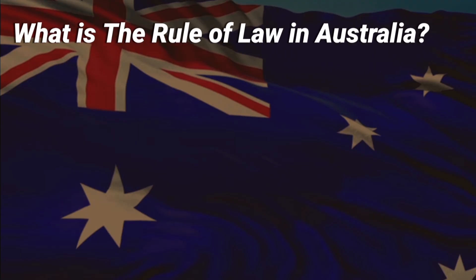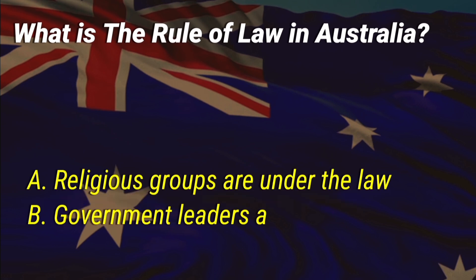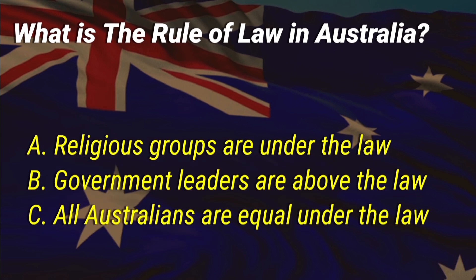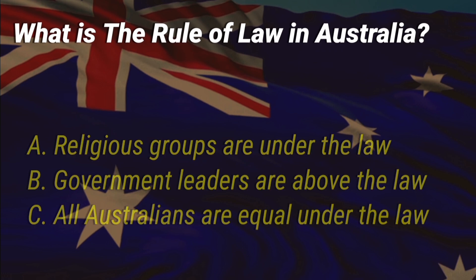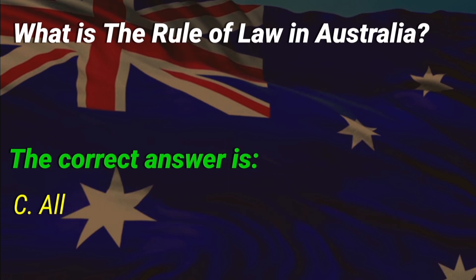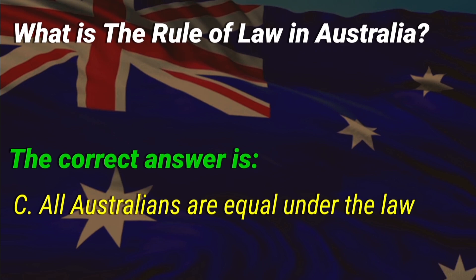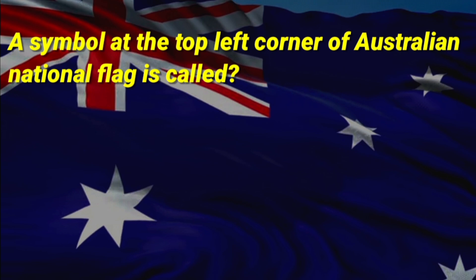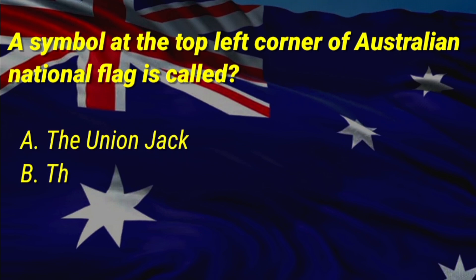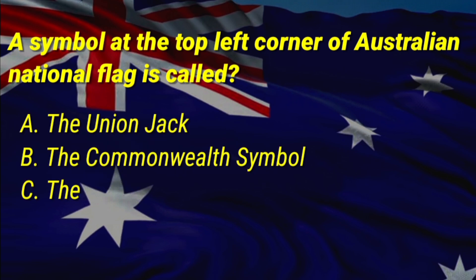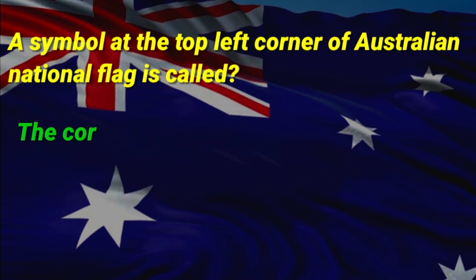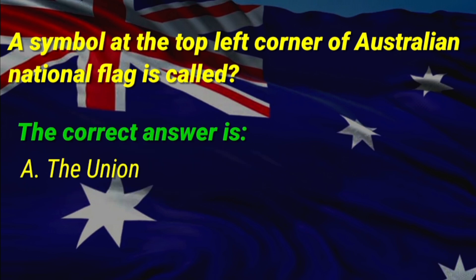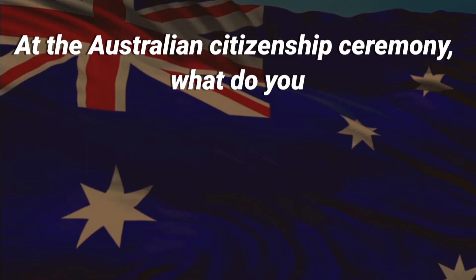What is the rule of law in Australia? A: religious groups are under the law, B: government leaders are above the law, C: all Australians are equal under the law. The correct answer is C, all Australians are equal under the law. The symbol at the top left corner of the Australian national flag is called A: the Union Jack. The correct answer is A, the Union Jack.